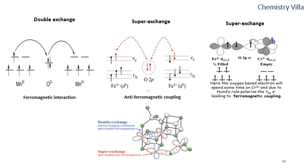In molecular magnets, oxygen atoms serve as a bridge between metal atoms. We can see in this molecule that these are the metals and these are the oxygens acting as a bridge. These interactions are very important in deciding the magnetic properties of the molecules.